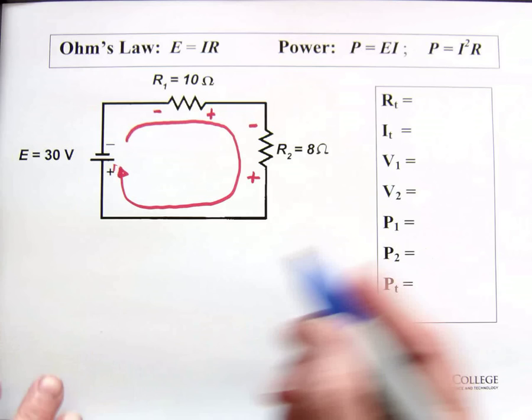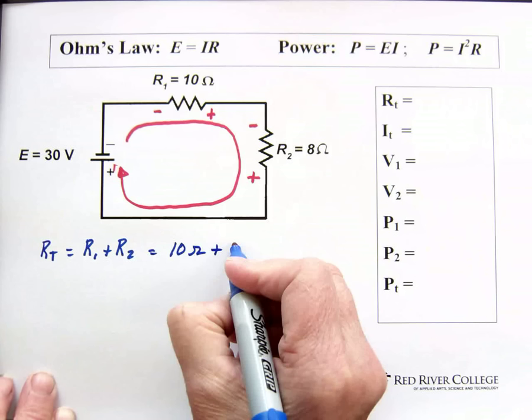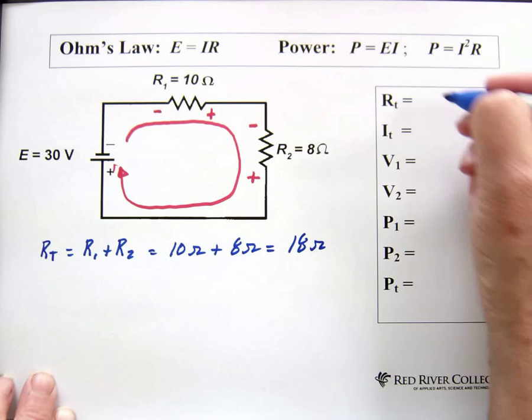So, R total equals R1 plus R2 in a series circuit. That is 10 ohms plus 8 ohms which equals 18 ohms. So, there's our total resistance which is 18 ohms.